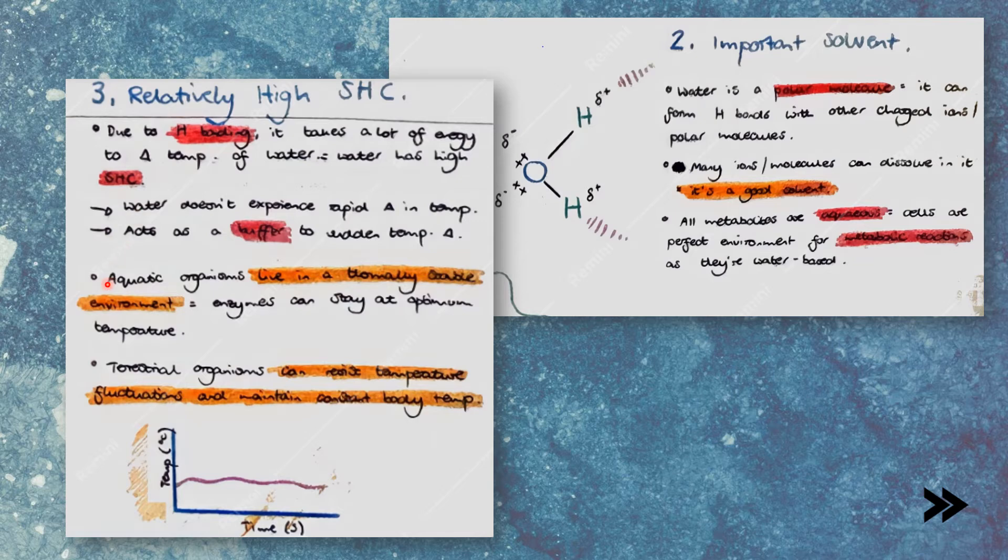Therefore, aquatic organisms can live in a thermally stable environment, and their enzymes can stay at optimum temperature. It also means that terrestrial organisms can resist temperature fluctuations and maintain a constant body temperature.